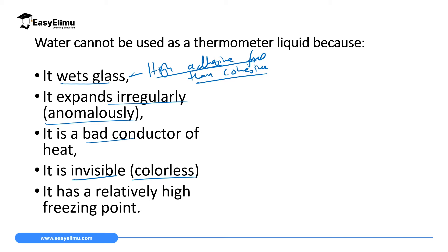Additionally, water has a relatively high freezing point of zero degrees Celsius, which means you cannot measure temperatures below zero, such as negative five degrees Celsius, because it freezes. We need a liquid with a low freezing point. Water also has a relatively low boiling point of 100 degrees Celsius, meaning it changes to a gaseous state too early. We need something that can measure up to 200 to 300 degrees Celsius.